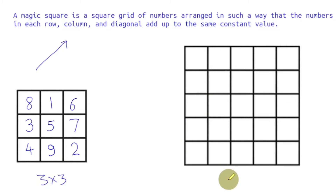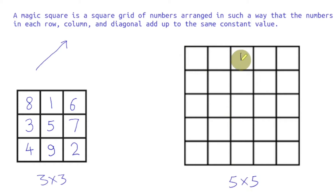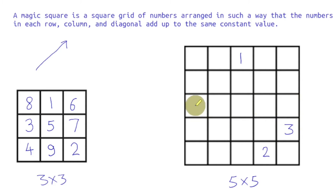For further practice or understanding, let's try the 5 by 5 as well. We'll start in the middle column of the first row. We try to move up and right — we're going out of the square, so we wrap down and write 2. Up and right: 3. We go out again, wrap to the other side: 4. Up and right: 5. The next cell up and right is filled, so we go one cell down: 6.